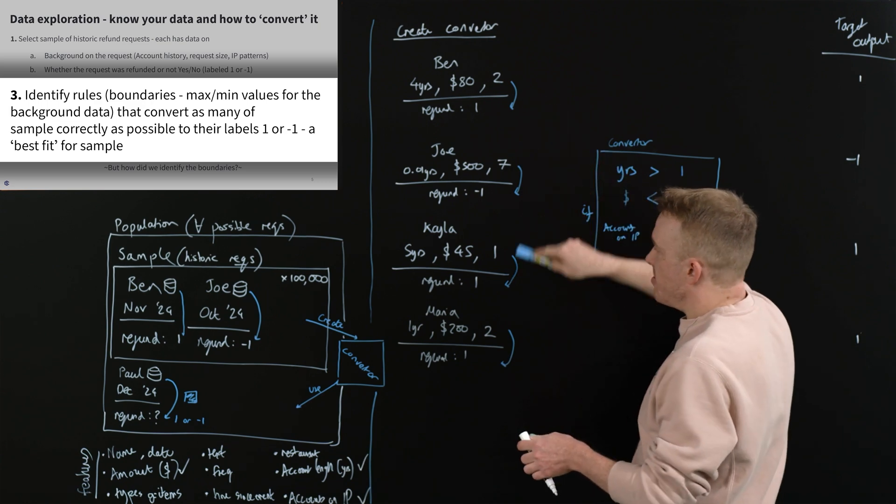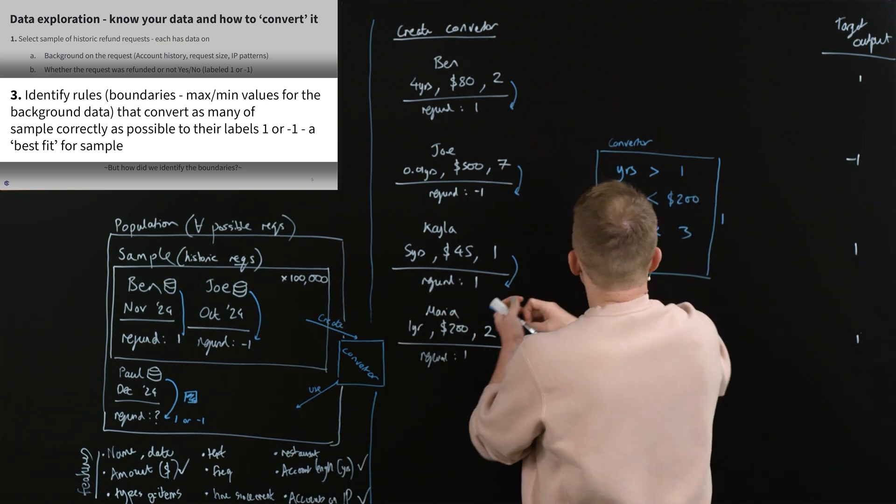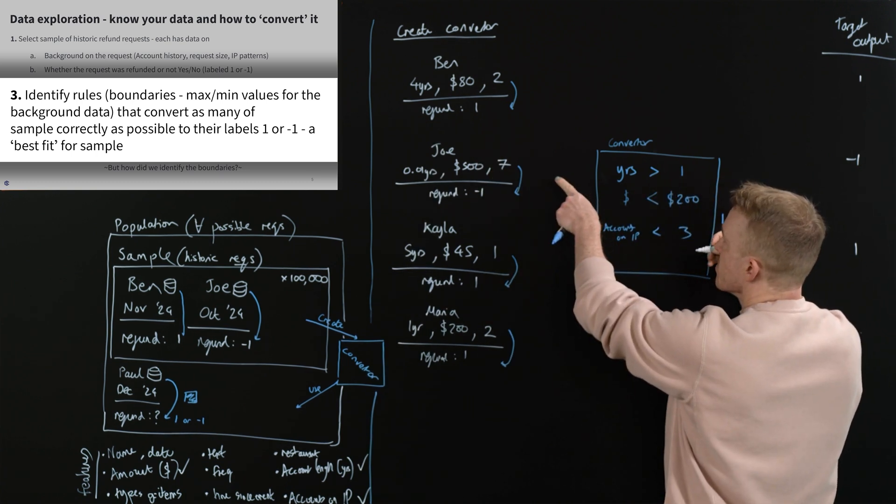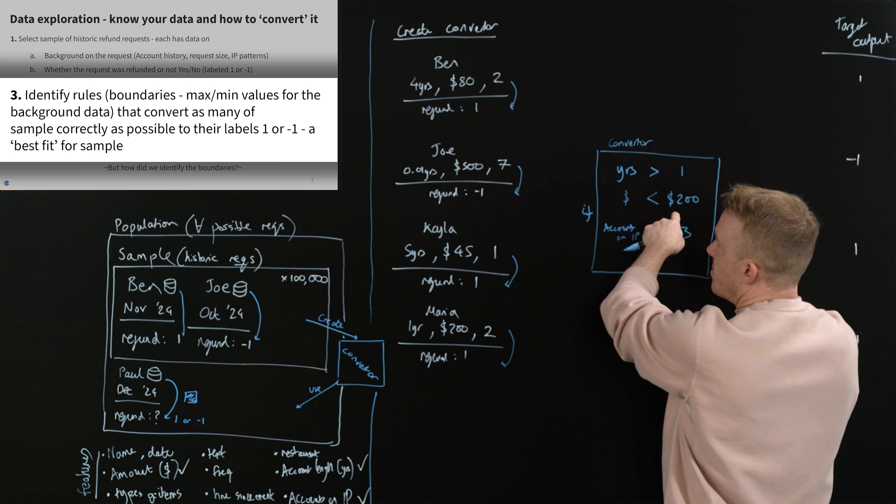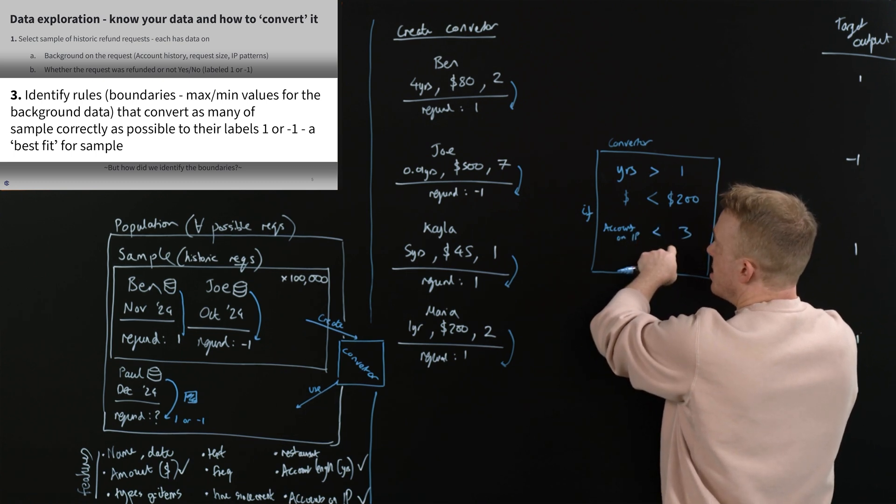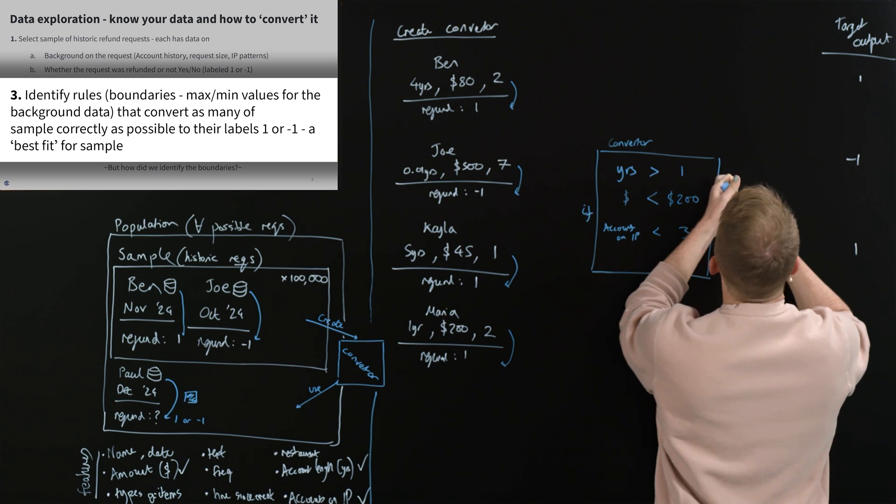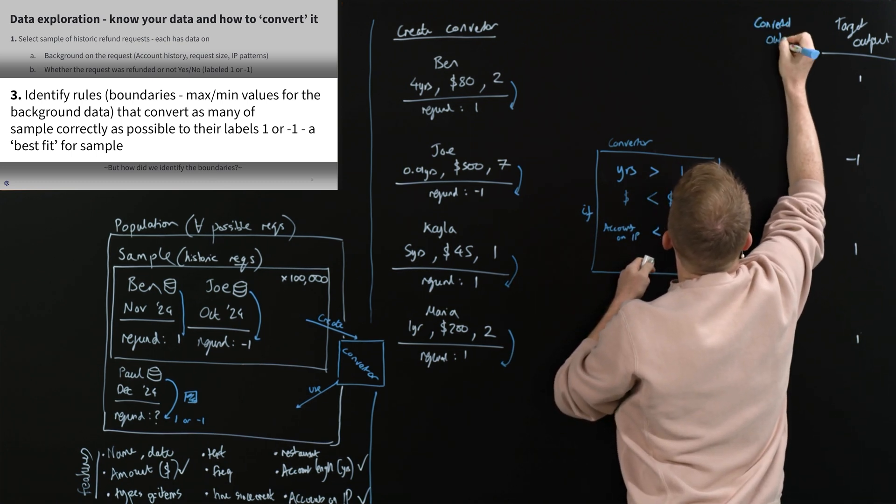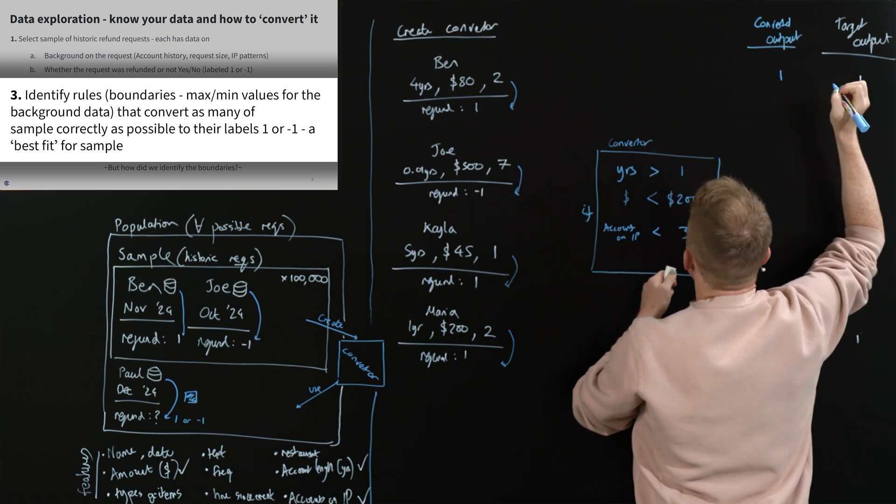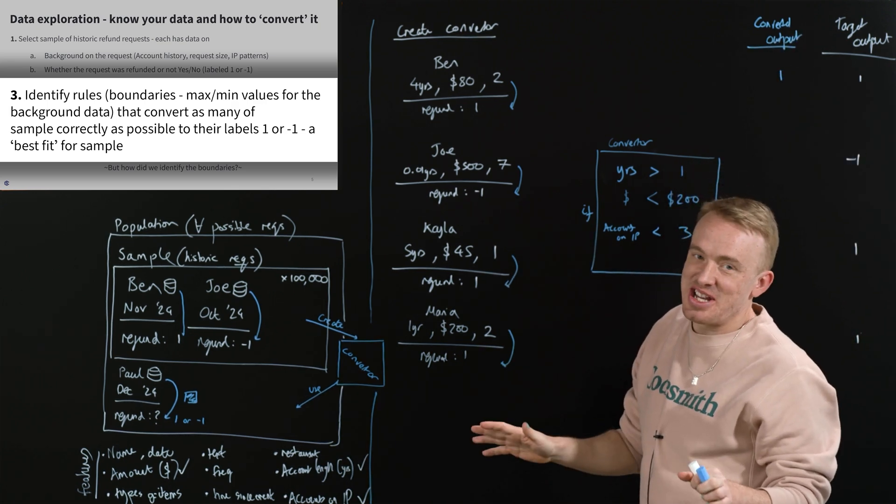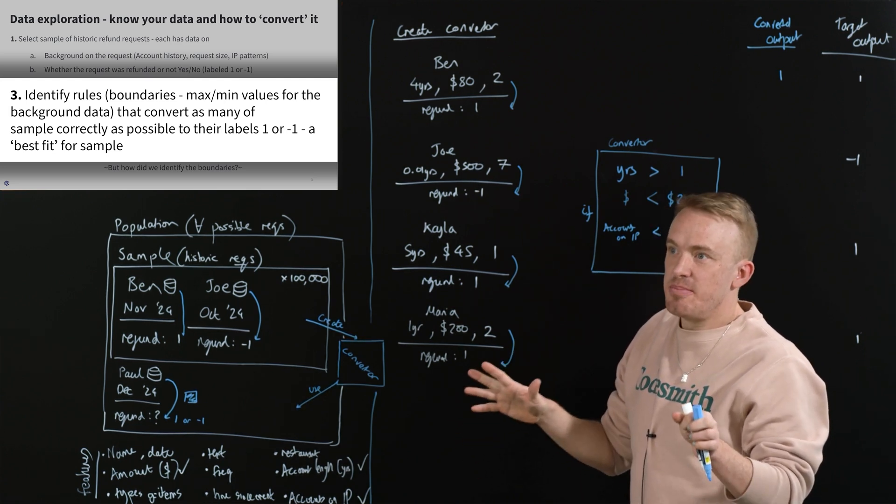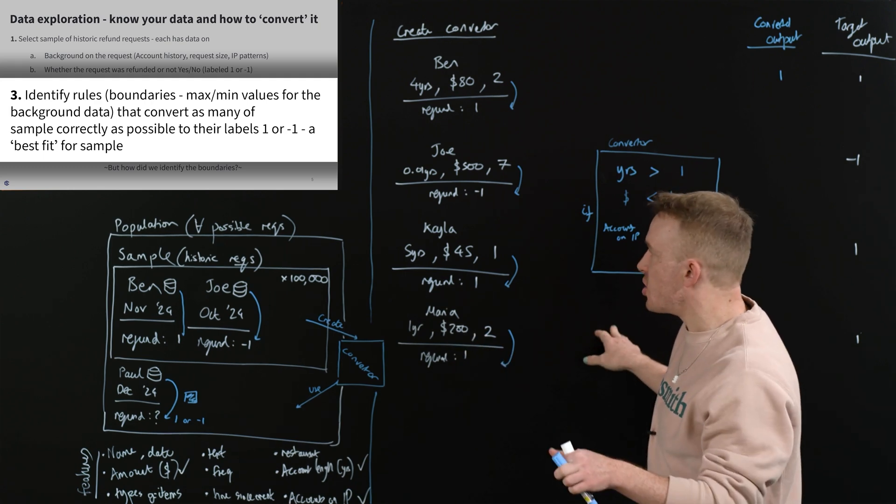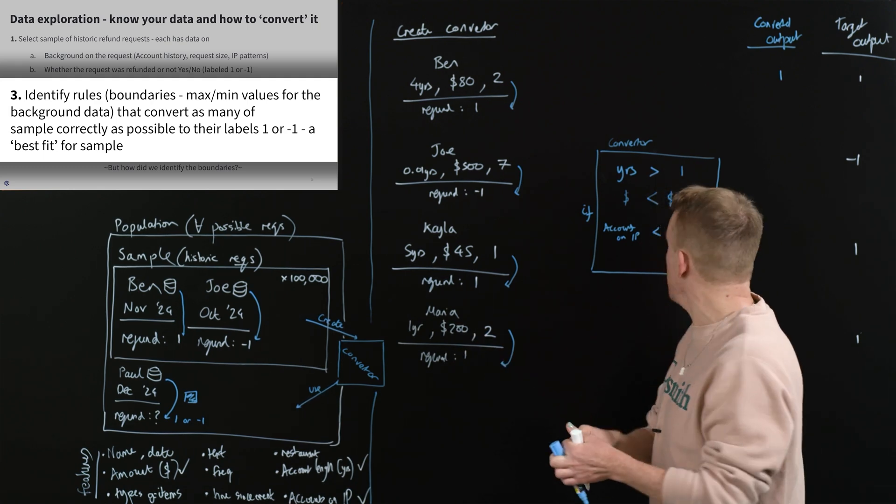There's our set of rules, people. Let's apply them to each person. Starting with Ben, you got an account longer than a year? Yep. Dollars less than 200 in your refund request? Yes. Accounts less than three on your IP? Therefore, what? One. Therefore, one. So our converted output is one. And people, this may all seem like, I got it. But this is going to be the foundation of building out, by the end of the workshop, neural networks with gradient descent. It all is going to be an extension of even this fraud detection tool.